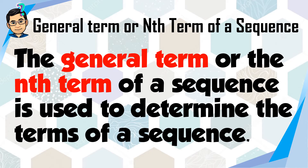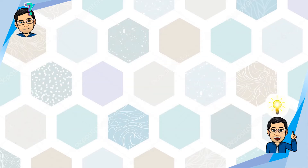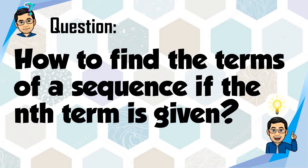The general term or n-th term of a sequence is used to determine the terms of a sequence. Given the formula — that formula is called the explicit formula. Usually, that formula is used to determine or compute the terms required by a sequence.